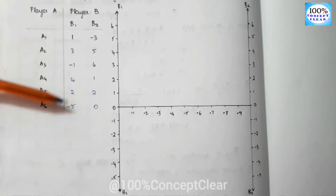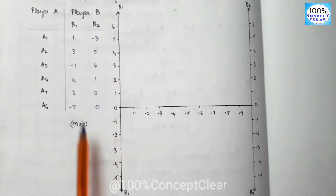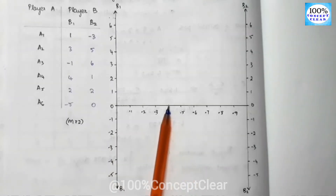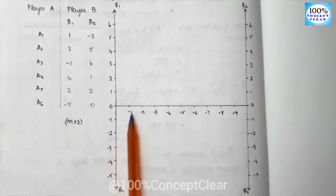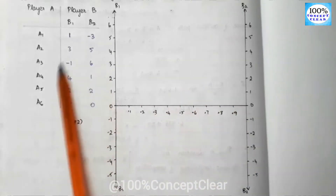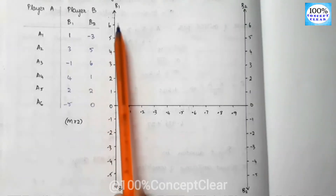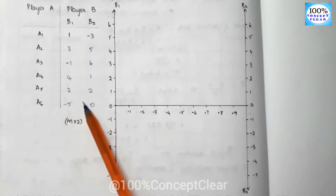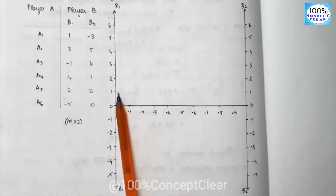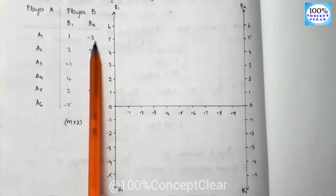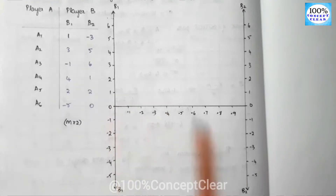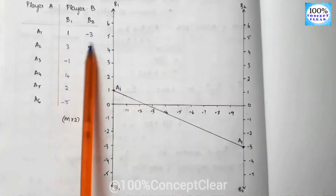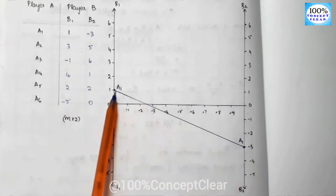Since this is an m×2 sum, we solve it using a graph. The x-axis is B1 and the y-axis is B2, with the center at 0. The scale is 1 cm per unit; the highest value is 6 and the lowest value is −5. Now for the first strategy, A1: the values are 1 and −3, so we plot the points (B1=1) and (B2=−3) and draw the A1 line.